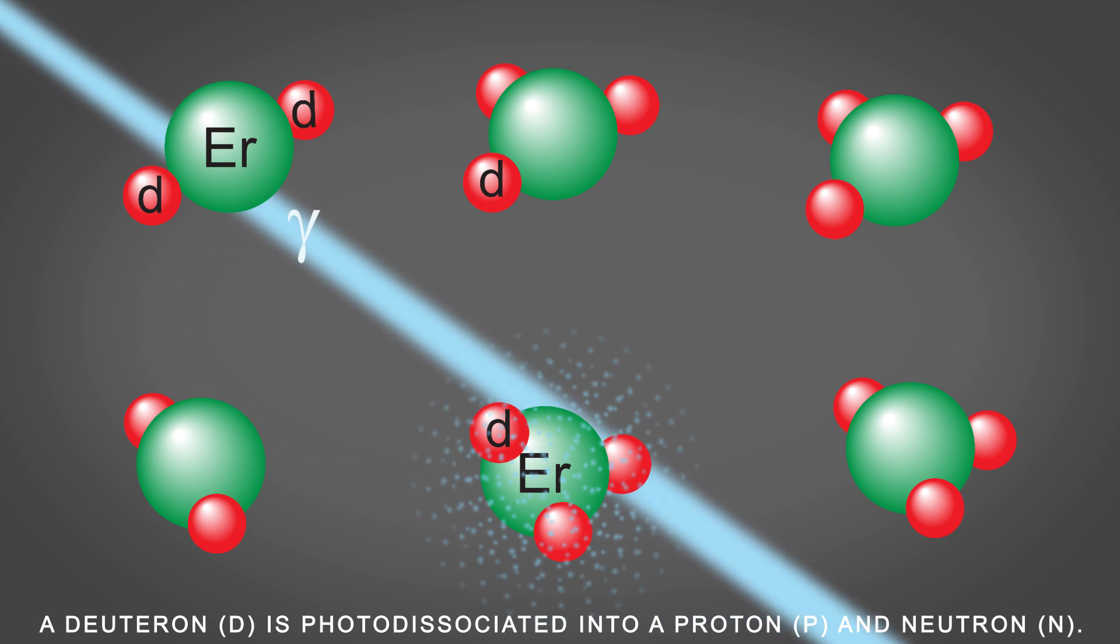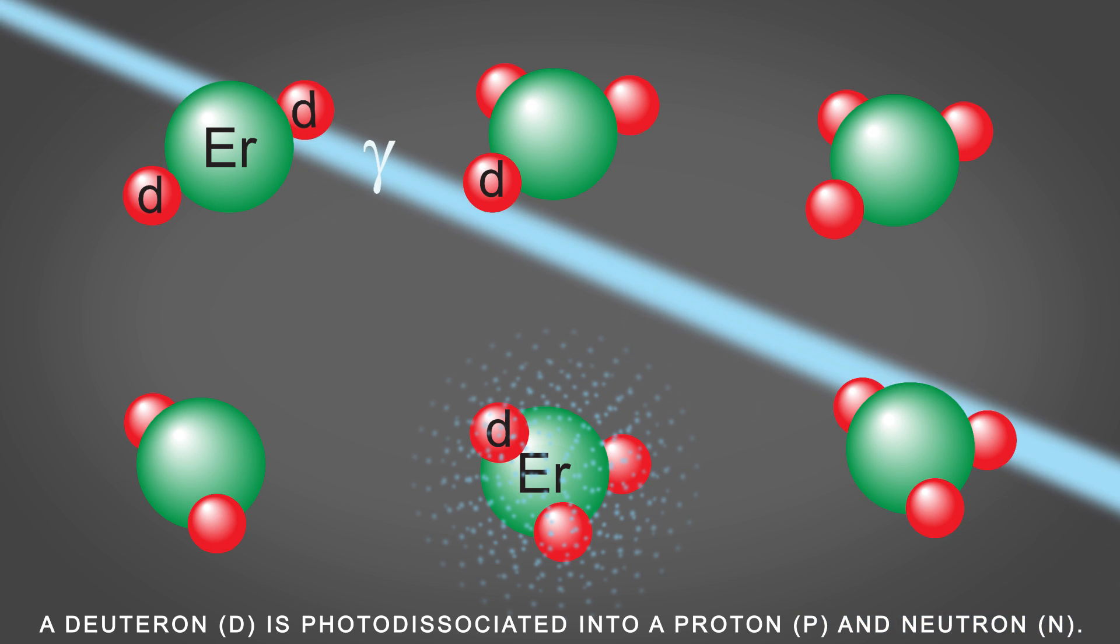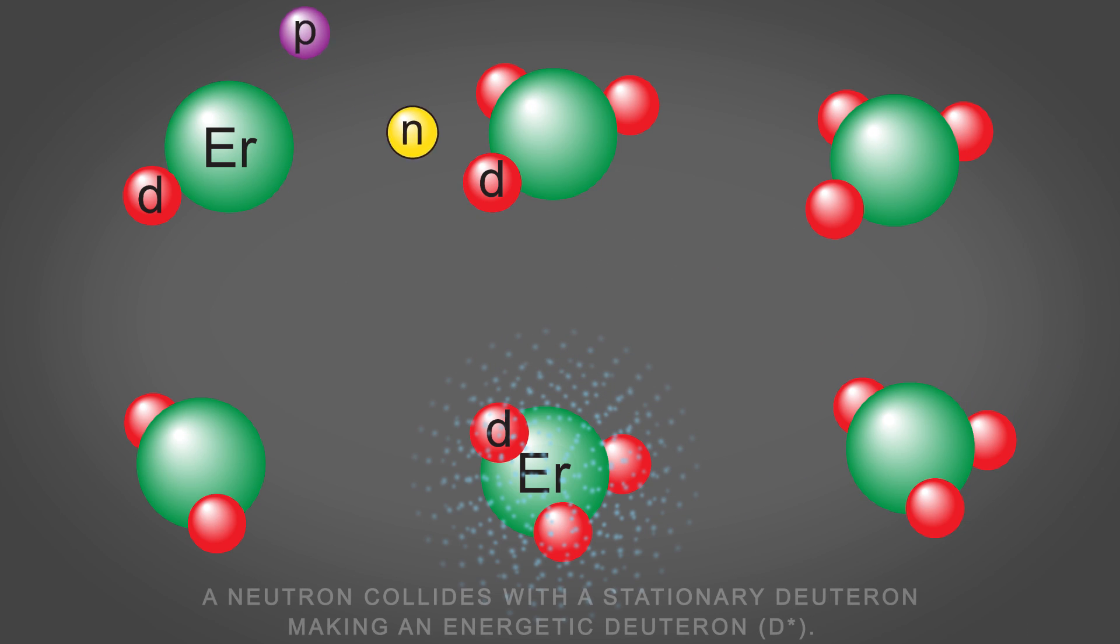A deuteron is photodissociated into a proton and neutron. A neutron collides with a stationary deuteron, making an energetic deuteron.